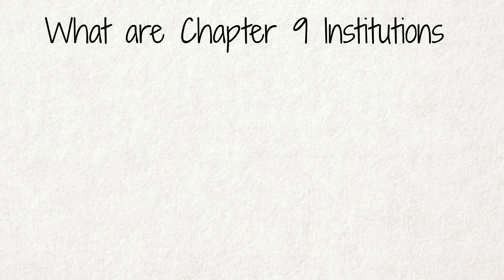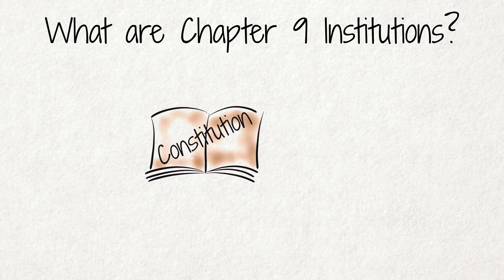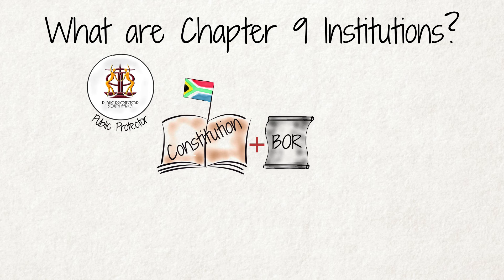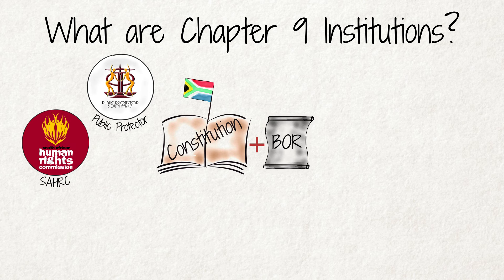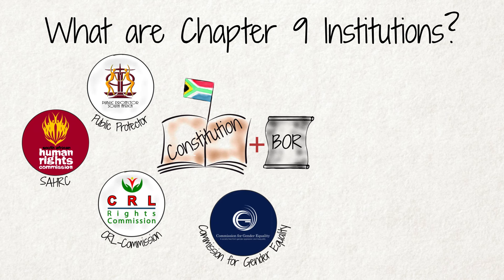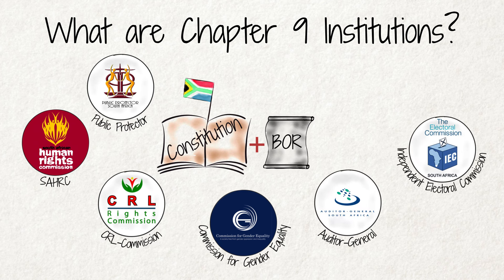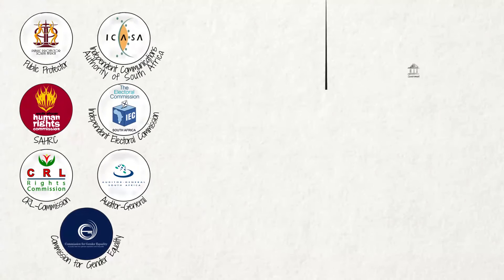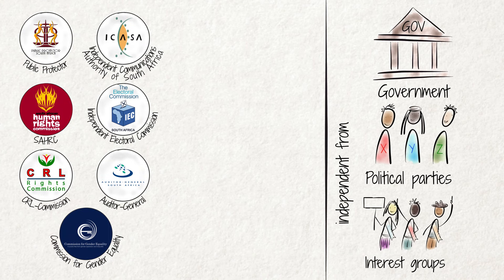What are Chapter 9 institutions? The Constitution creates several institutions in Chapter 9 which aim to support and protect democracy and to promote and protect everyone's human rights. These are: The Public Protector, The South African Human Rights Commission, The Commission for the Promotion and Protection of the Rights of Cultural, Religious and Linguistic Communities, The Commission for Gender Equality, The Auditor General, The Independent Electoral Commission, and The Independent Communications Authority of South Africa. These institutions are separate from government and independent from political parties and other interest groups.